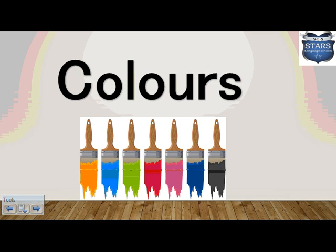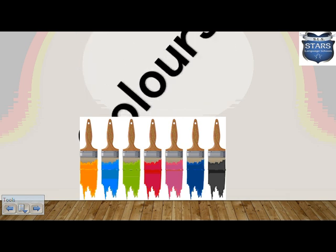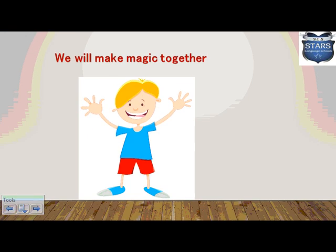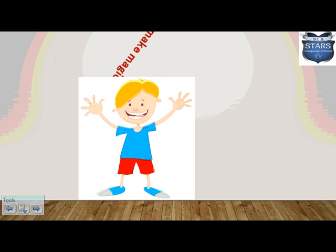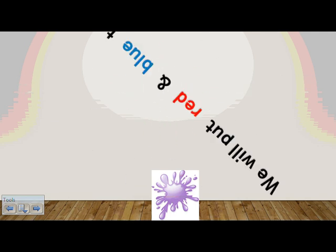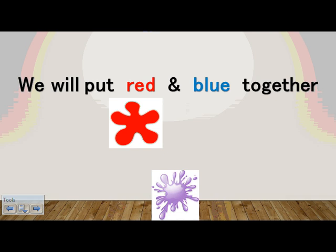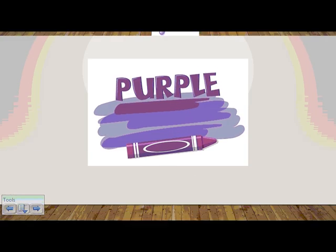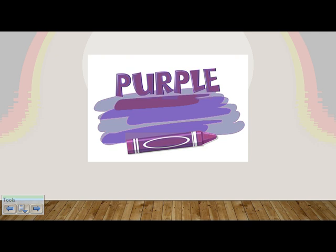Now it's time for colors! Are you ready for our new color? We are going to make some magic together. We are going to put red color — if you have play-doh, get a red play-doh and mix it with a blue play-doh. What's going to happen after mixing these colors together? Yes, we will get purple! Purple comes from mixing red and blue together.